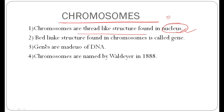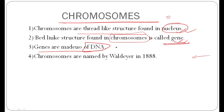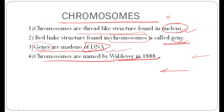If you need to find DNA, this should be the nucleus. The bead-like structure found in a chromosome is called a gene. Genes carry parents' characteristics in chromosomes, and genes are made up of DNA. DNA carries the parents' characteristics. Chromosomes were named by Waldeyer in 1888.